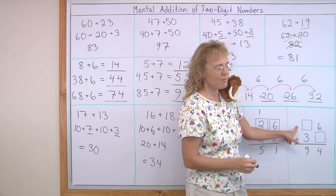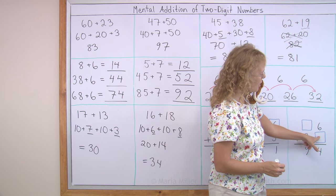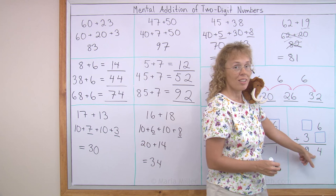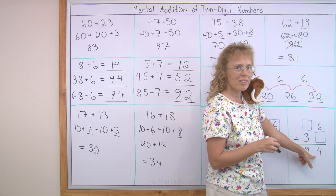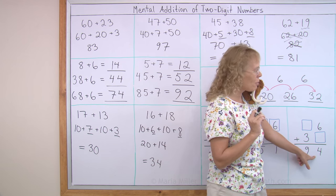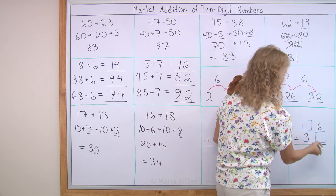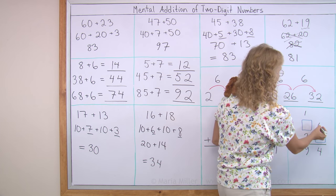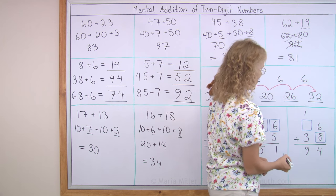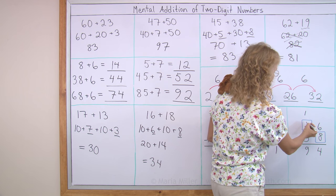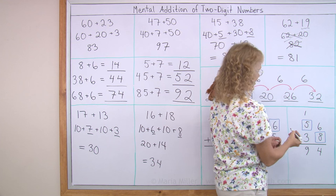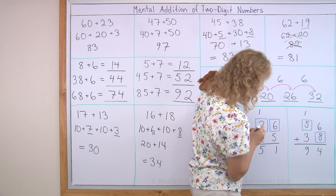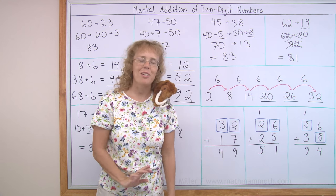How about here? 6 plus something makes 4. Again, a smaller number here. So that must mean we have a regrouping here. It's actually 14, 1 ten and 4. 6 plus 8 makes 14. And then, over here, we would need 5, right? Did I get it right? Matthew says yes. Well done with this lesson.